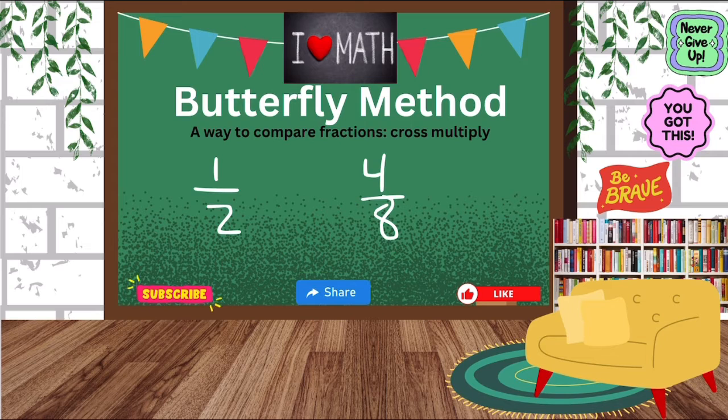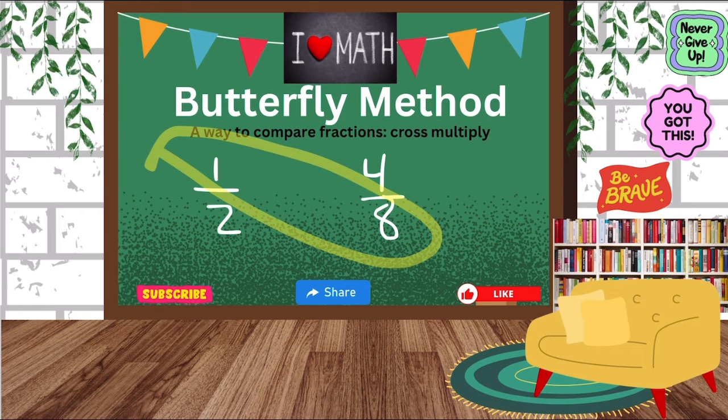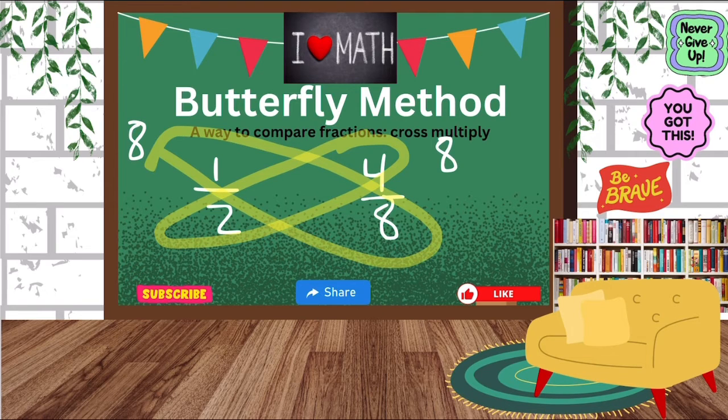Same thing. We're going to cross-multiply. We're going to do one times eight and one times eight is eight. So I'm going to put that eight on the side of the one-half. And then four times two is also eight and I'm going to put that eight on the other side. So now we have two-eighths on both sides. Eight is equal to eight, so therefore, one-half is equal to four-eighths.